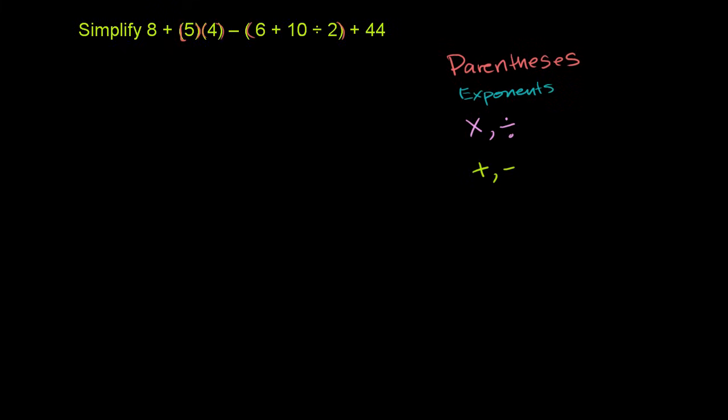So let's apply it over here. Let me rewrite this whole expression. So it's 8 plus 5 times 4 minus, in parentheses, 6 plus 10 divided by 2 plus 44.